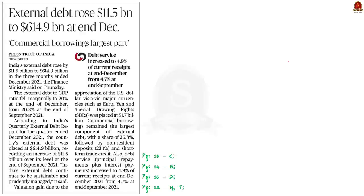India's external debt rose by 11.5 billion dollars to 614.9 billion dollars in three months. However, the external debt-to-GDP ratio fell marginally to 20% at the end of December. In this context, let us quickly go through what external debts are and how they will impact India's growth.